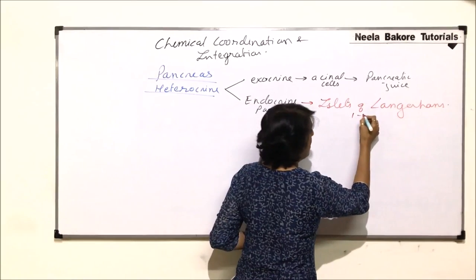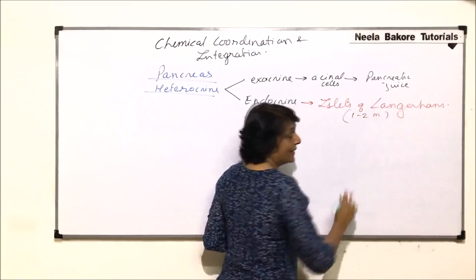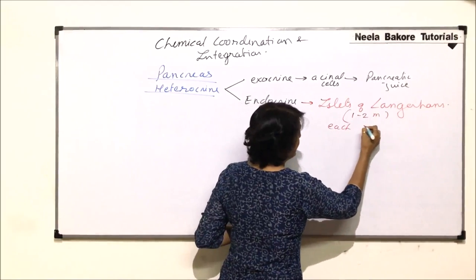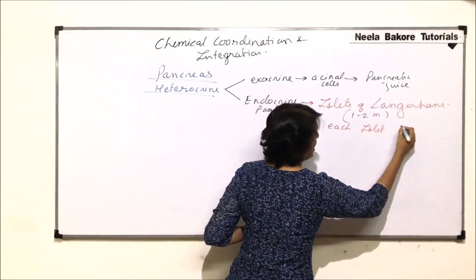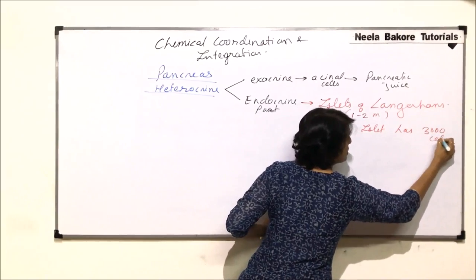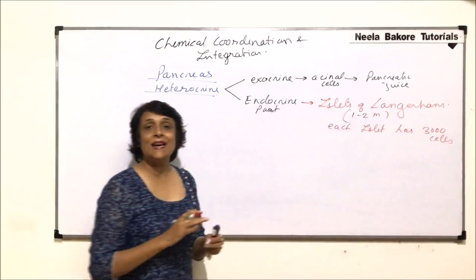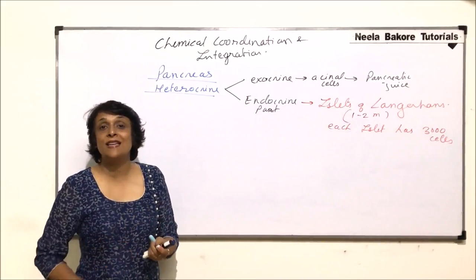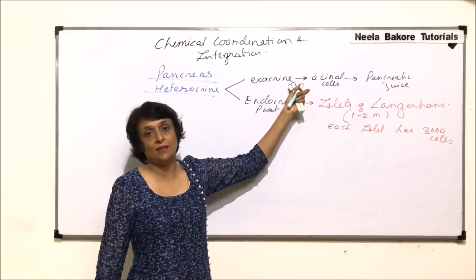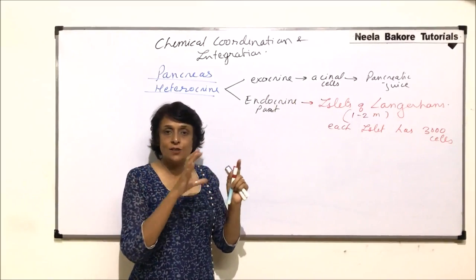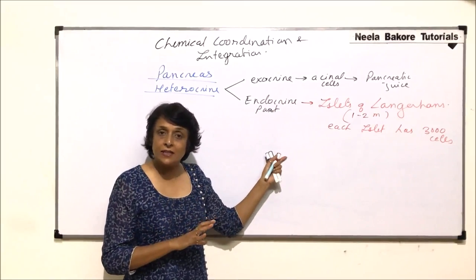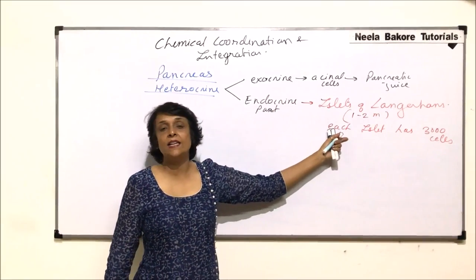Each islet of Langerhans has about three thousand cells. There are many islets of Langerhans which are scattered in the connective tissue between these acinar cells. So acinar cells are there, and in between these acinar cells is connective tissue.